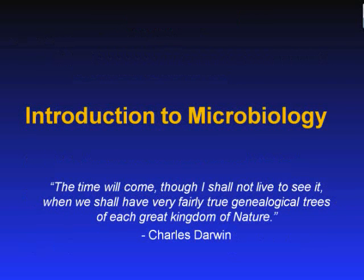Before jumping into the first topic on basic microbiology, I would like to point out a nice quote from Charles Darwin, whose name you may recognize as being the founder of the theory of natural selection. Darwin realized that all species of life have evolved over time from common ancestors. He published compelling supporting evidence of this in his 1859 book, On the Origin of Species, where he presented his scientific theory of natural selection, which is responsible for the branching pattern of evolution.